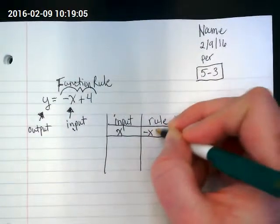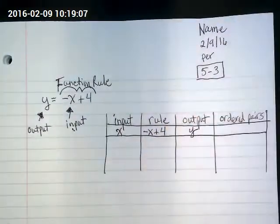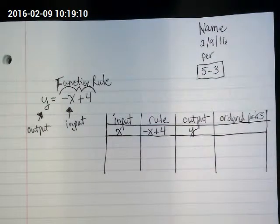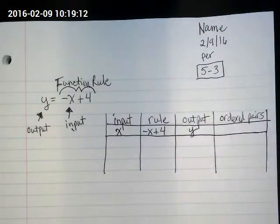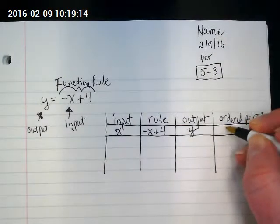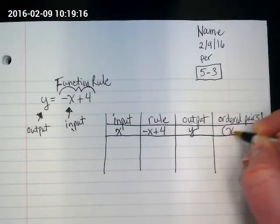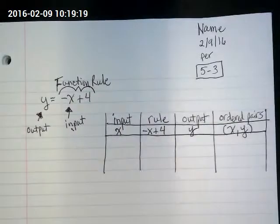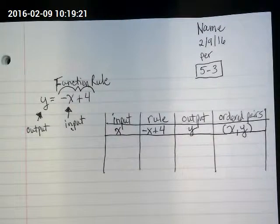Negative x plus 4. And if you recall from our vocabulary work last week, an ordered pair is an x comma y pair. x is always first, y is always second.